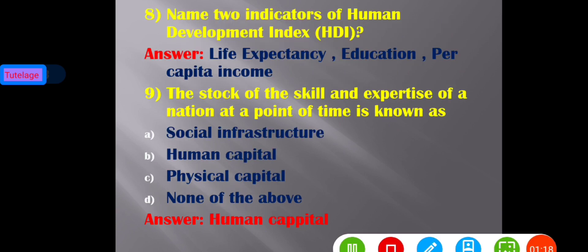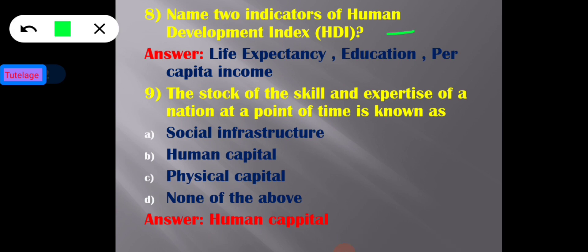Name two indicators of the Human Development Index (HDI). The HDI is a statistic composite index used to rank countries into four tiers of human development. It is a summary composite measure of a country's average achievements in three aspects: life expectancy, education, and per capita income. So the three indicators of HDI are life expectancy, education, and per capita income.